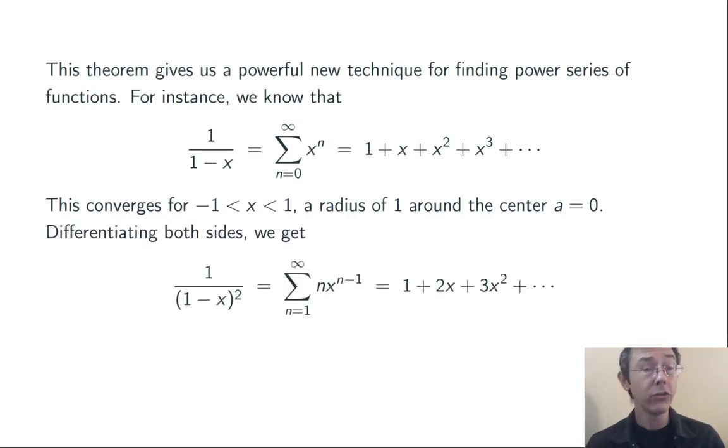For example, if we differentiate both sides, we get a power series for 1 over (1 minus x) squared. 1 plus 2x plus 3x squared and so on.